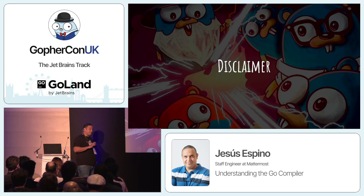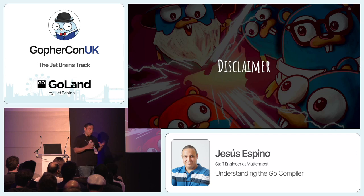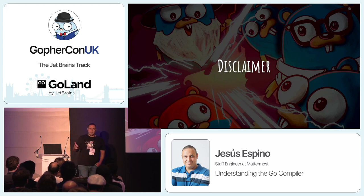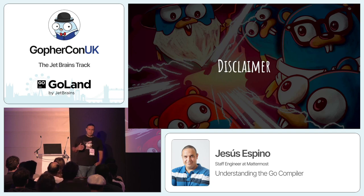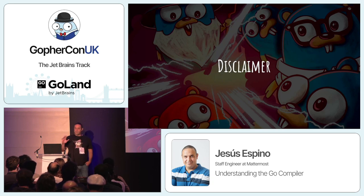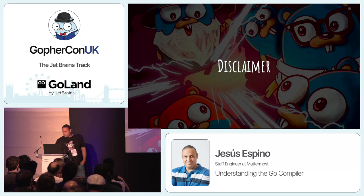First of all, a disclaimer. I'm not a programmer of the Go compiler. All that we are going to see here is from my learnings reading the Go compiler code. I work for Mattermost, which is a communication platform similar to Slack, so I basically write APIs and JavaScript code.